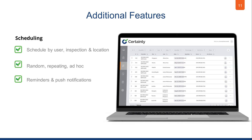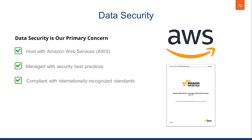With Certainty, you can also schedule inspections by user, by checklist, and by location. You can define whether schedules are random, whether they repeat, and you can also have reminders and push notifications to make sure your team knows what they're supposed to do and when they're supposed to do it.